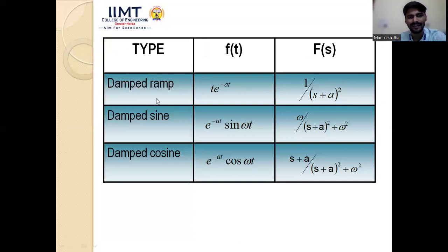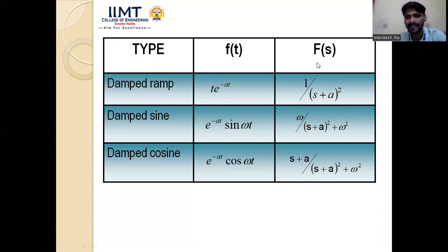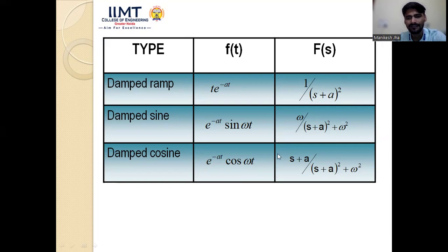The damped ramp signal t·e^(−at) uses the differentiation in the s-domain property, giving Laplace transform 1/(s+a)². The damped sine e^(−at)·sin(ωt) has Laplace transform ω/[(s+a)²+ω²]. The damped cosine e^(−at)·cos(ωt) has Laplace transform (s+a)/[(s+a)²+ω²].